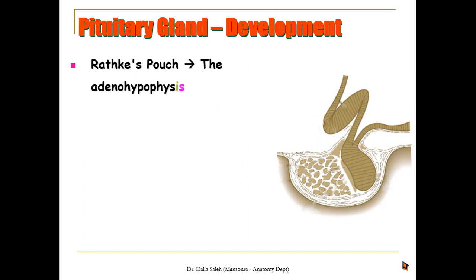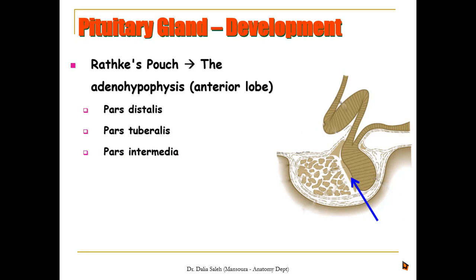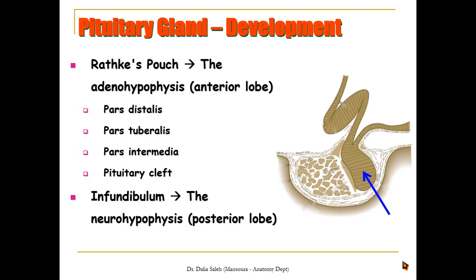Rathke's pouch gives us the anterior lobe or adenohypophysis, which is divided into the following parts: the pars distalis, which forms the main part of the anterior lobe; the pars tuberalis, which wraps around the stalk of the infundibulum; and the pars intermedia, which forms the middle lobe. The space between them is called the pituitary cleft. The infundibulum gives us the posterior lobe or neurohypophysis, and we can see the infundibular recess of the third ventricle.